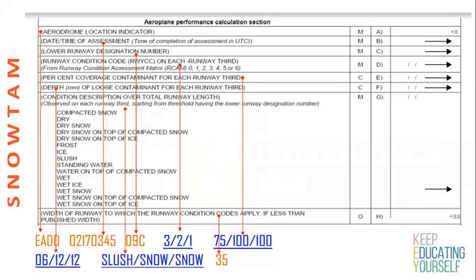Percentage coverage and depth of loose contaminate for each runway third is 06 mm / 12 mm / 12 mm. We then report the description of what contaminate is actually present — out of 17 contaminates, we mention whichever is present. For example: the first third is slush, the second third is snow, and the third third is snow.